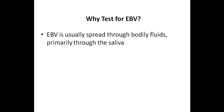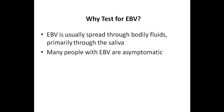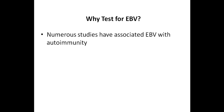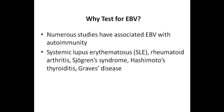The sixth blood test I recommend is Epstein-Barr virus. Epstein-Barr virus is one of the most common viruses in humans, usually spread through bodily fluids, primarily through the saliva. Although many people with Epstein-Barr virus are asymptomatic, some of the symptoms associated with an Epstein-Barr virus infection include fatigue, fever, sore throat, swollen lymph nodes in the neck, a rash, and an enlarged spleen. Numerous studies have associated Epstein-Barr virus with autoimmunity, including systemic lupus erythematosus, rheumatoid arthritis, Sjögren's syndrome, Hashimoto's thyroiditis, and Graves' disease.